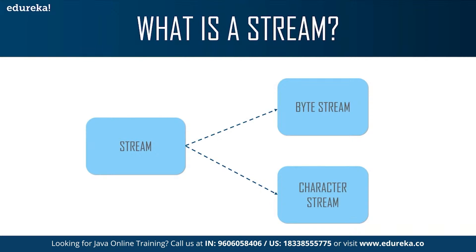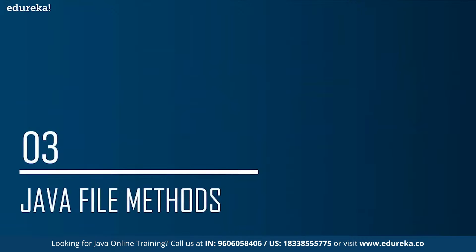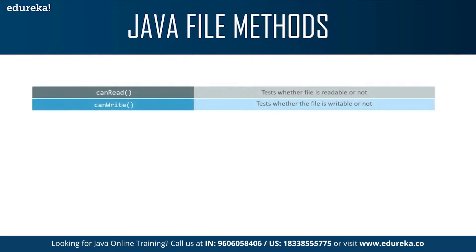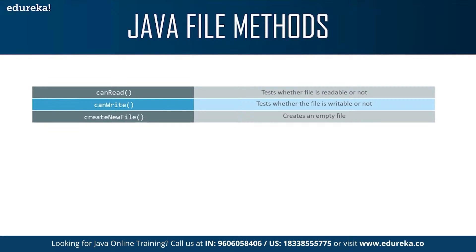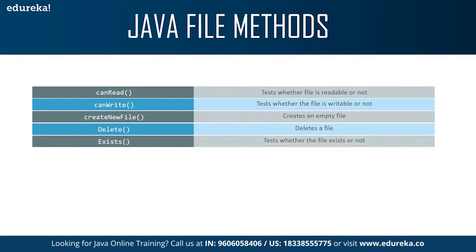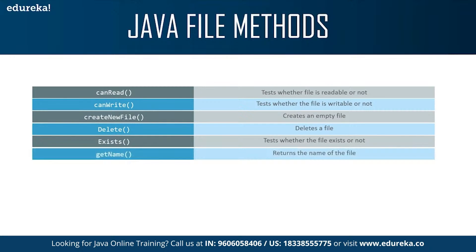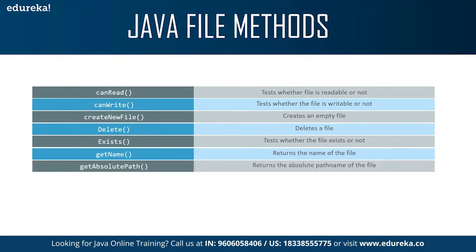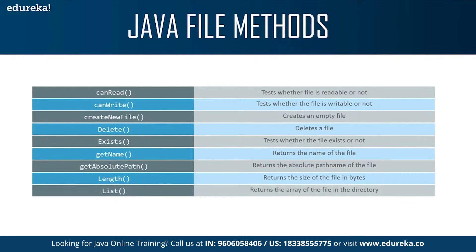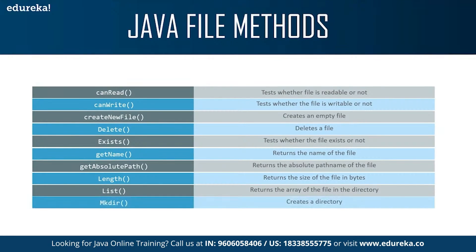So those are the two types of streams available. Now let's move further and have a look at the various file methods useful for Java file operations. First, canRead — this method tests whether the file is readable or not. Next, canWrite — this method tests whether the file is writable or not. Next, createNewFile — creates an empty file. Next, delete — deletes the file. exists — tests whether the file exists or not. getName — returns the name of the file. getAbsolutePath — returns the absolute path name of the file. And length — returns the size of the file in bytes.